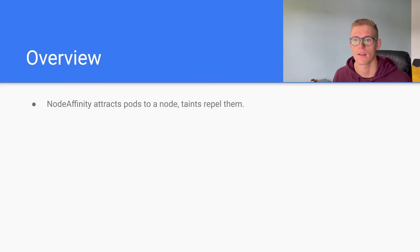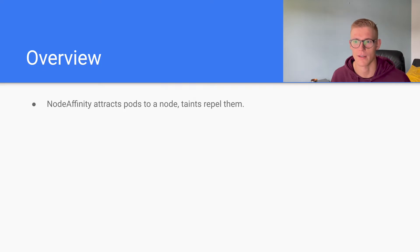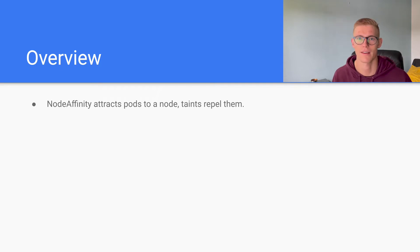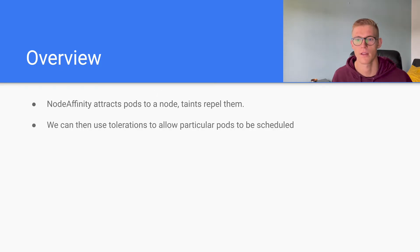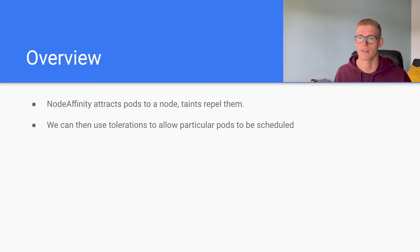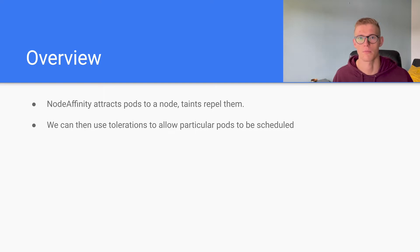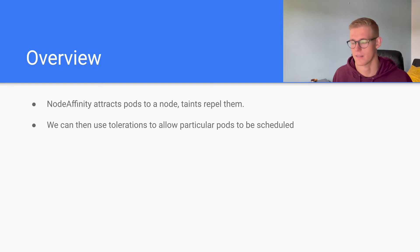In our last video we looked at node affinity, and node affinity attracts pods to a node. The opposite concept of this is the taint — a taint repels a pod from a node. We can then use tolerations to allow particular pods to be scheduled. So if our taint repels all pods, we can select particular pods, apply a toleration to that pod, and then that pod can be scheduled on our node that has the taint.